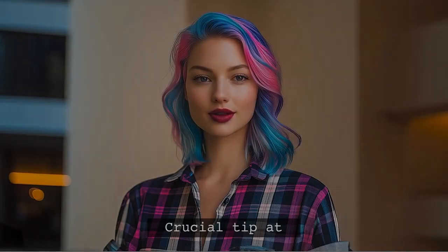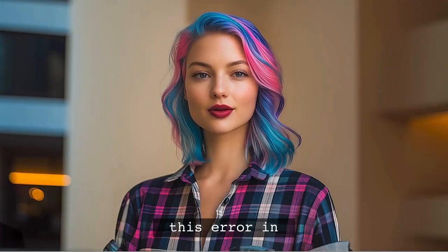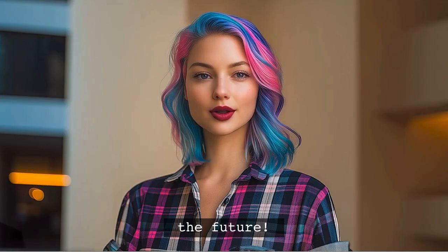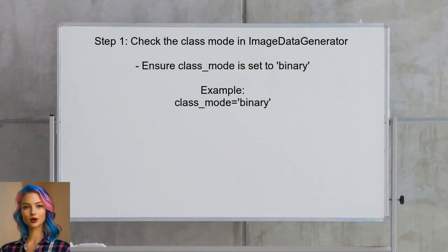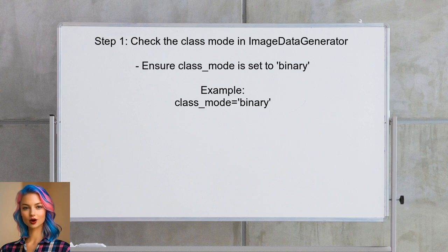Don't go anywhere — I've got a crucial tip at the end that will help you avoid this error in the future. To resolve the value error, first check the class mode in the image data generator. Since the model is set up for binary classification, the class mode should be set to binary.